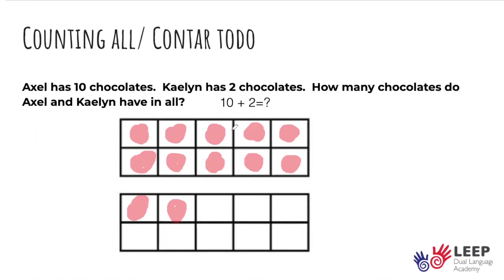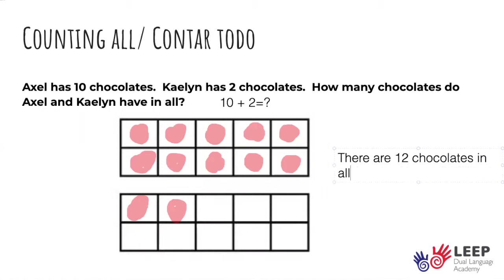So we count all: 1, 2, 3, 4, 5, 6, 7, 8, 9, 10, 11, 12. There are 12 chocolates in all. Because the number includes 10, we can group objects in 5 and 5 or 10 and 10. This helps students begin to see a quantity and connect it immediately to a number, and little by little it can help them move away from counting all and visually recognize the amount quickly.